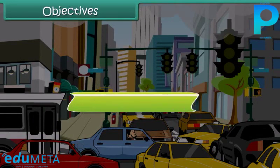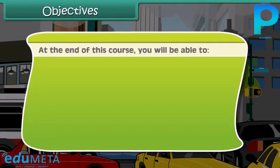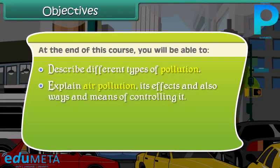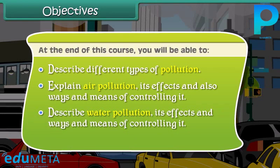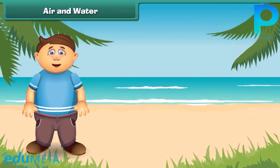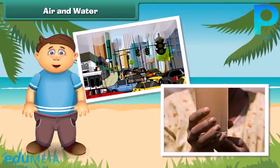At the end of this course, you will be able to describe different types of pollution, explain air pollution — its effects and also ways and means of controlling it, describe water pollution — its effects and ways and means of controlling it, and explain noise pollution and soil pollution.